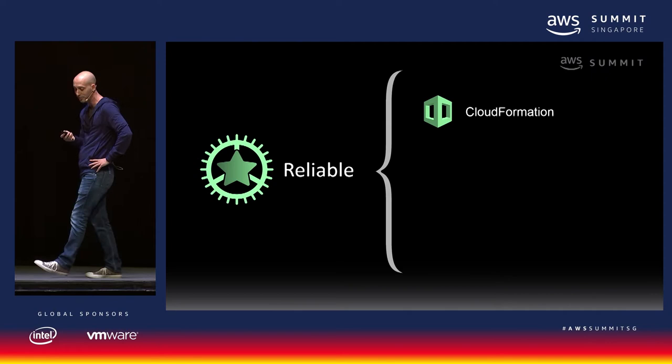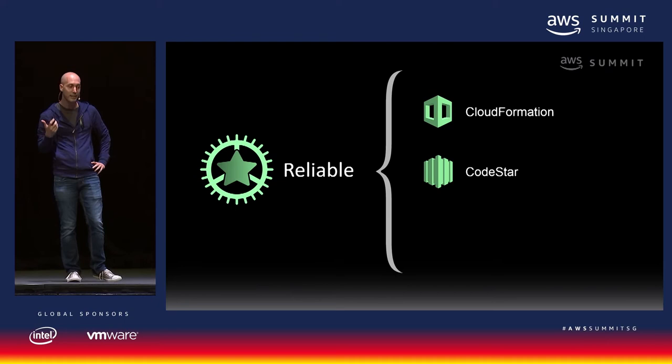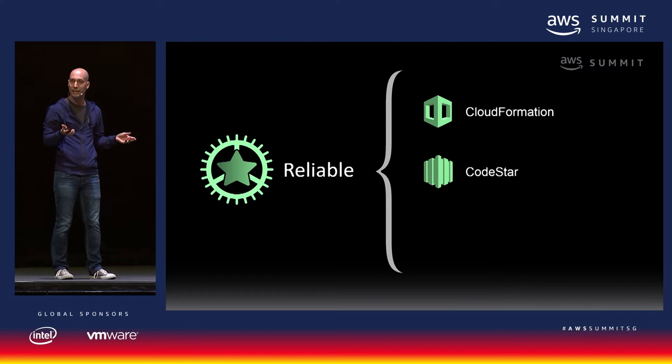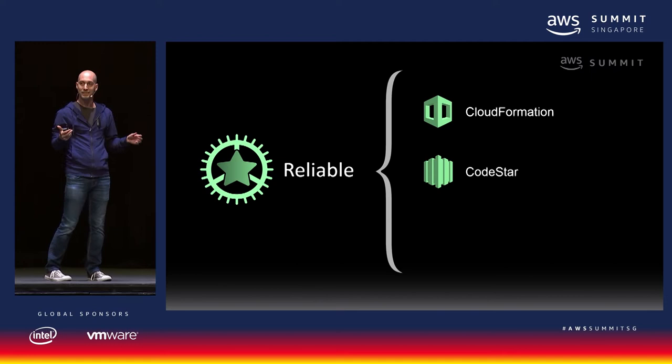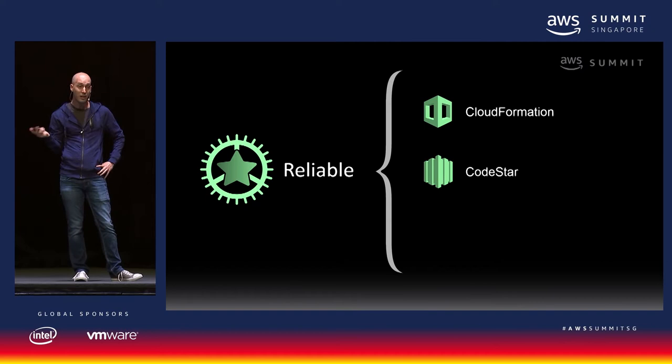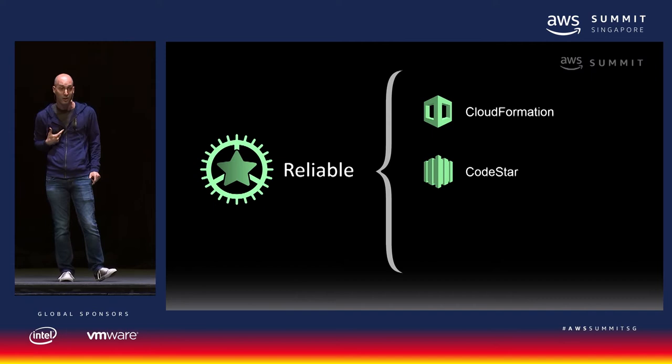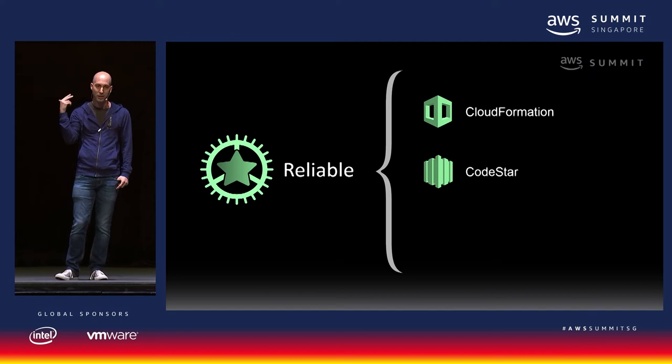CodeStar is our service that makes it easy to get started with development best practices, whether setting up a Git repository in AWS CodeCommit or connecting to GitHub. CodeStar sets you up with a CI/CD — continuous integration and continuous delivery — pipeline with fast deployments, all managed for you in a few clicks. That's how I start all my projects. It's important not only to have reliable infrastructure, but also a reliable development and deployment process.